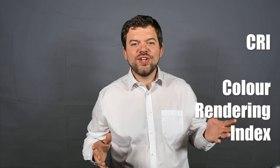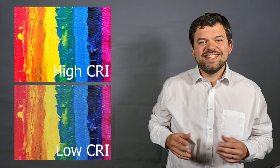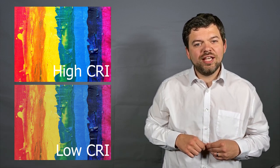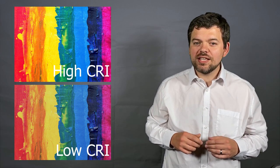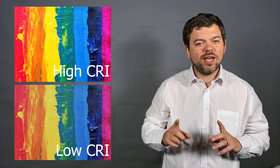CRI stands for Color Rendering Index and was devised by the CIE, or to use their full name, La Commission Internationale de L'Éclairage, who were originally formed in 1913. CRI is a measure of how faithfully a white light source recreates color when compared to an ideal source of the same color temperature.